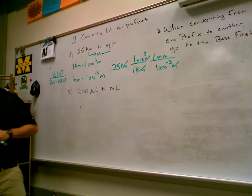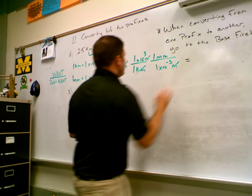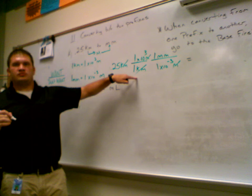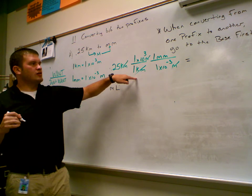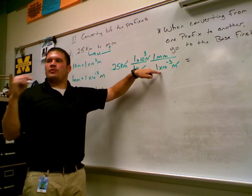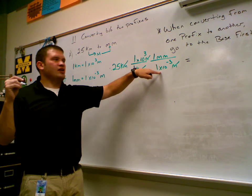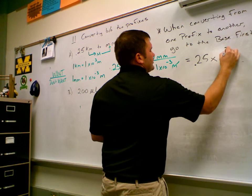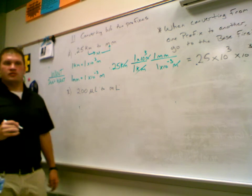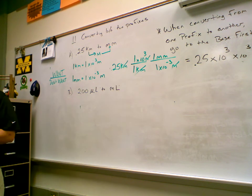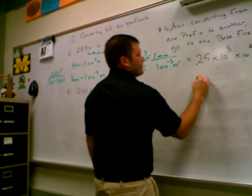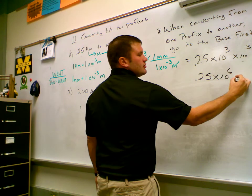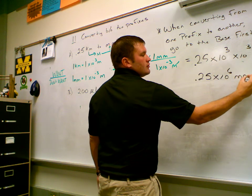This equals 0.25 times ten to the third — dividing by one doesn't change anything. The ten to the negative third is on the bottom, so when it comes to the top it becomes positive. So it's 0.25 times ten to the third times ten to the third. Those exponents add together, giving 0.25 times ten to the sixth millimeters.